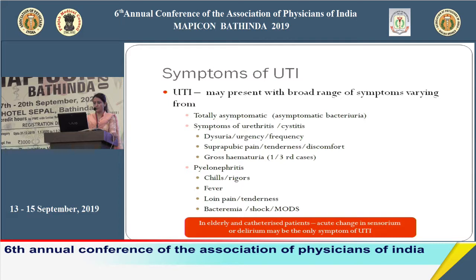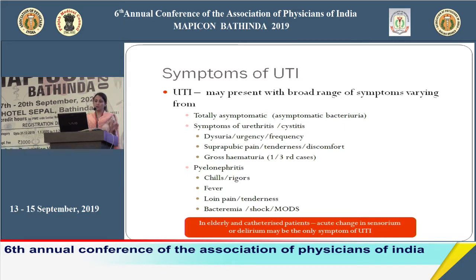UTI may present with a broad range of symptoms. Patients may be totally asymptomatic — referred to as asymptomatic bacteriuria. Patients who have lower UTI have typical local symptoms: severe painful micturition called dysuria, urgency, and frequency of urine. Patients with cystitis have suprapubic pain and discomfort, and one third may present with gross hematuria.